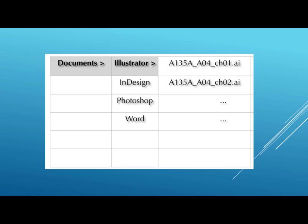Here's a quick example: you might have a folder on your thumb drive called 'Documents,' and under that you'd have subfolders for Illustrator, InDesign, Photoshop, and Word files — which is pretty similar to what you'll see in this class. Under Illustrator you might have the class number, the assignment you're working on, and so on. That's essentially what a flat file structure looks like.